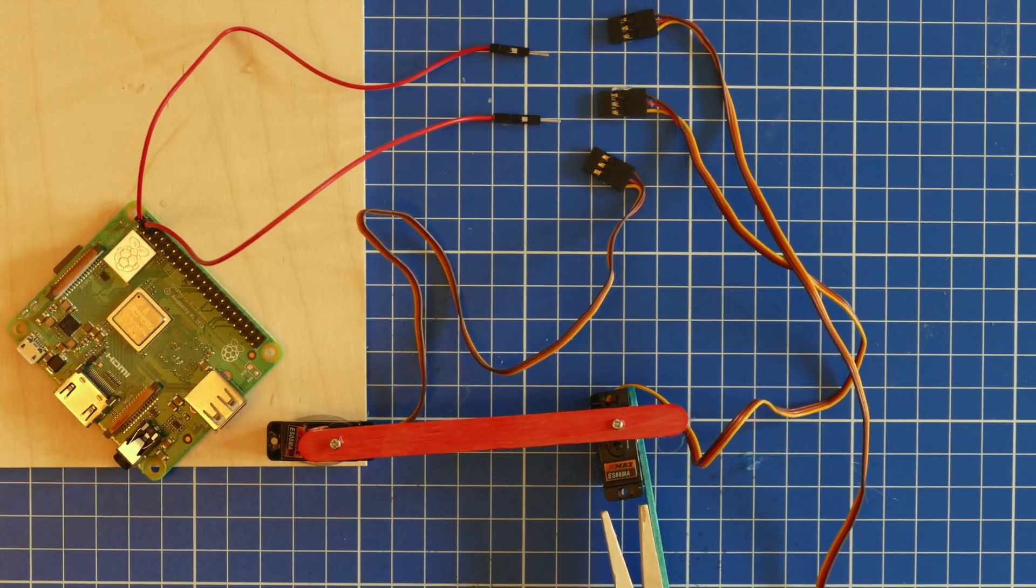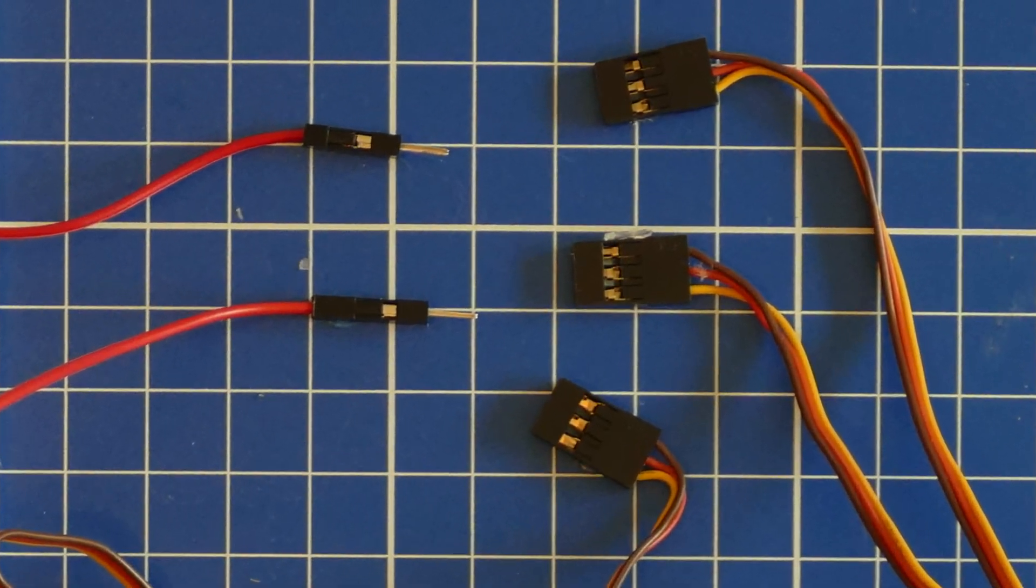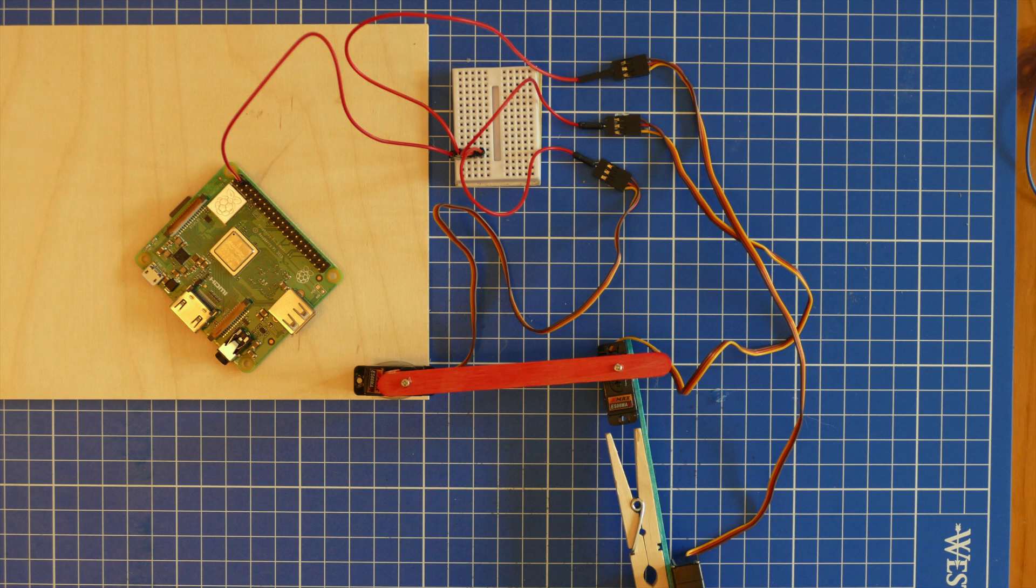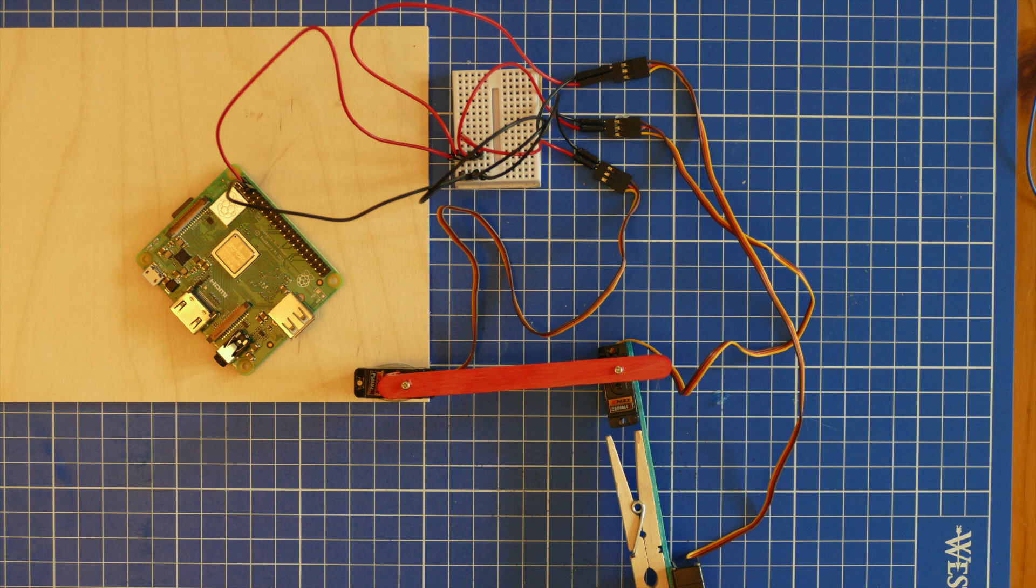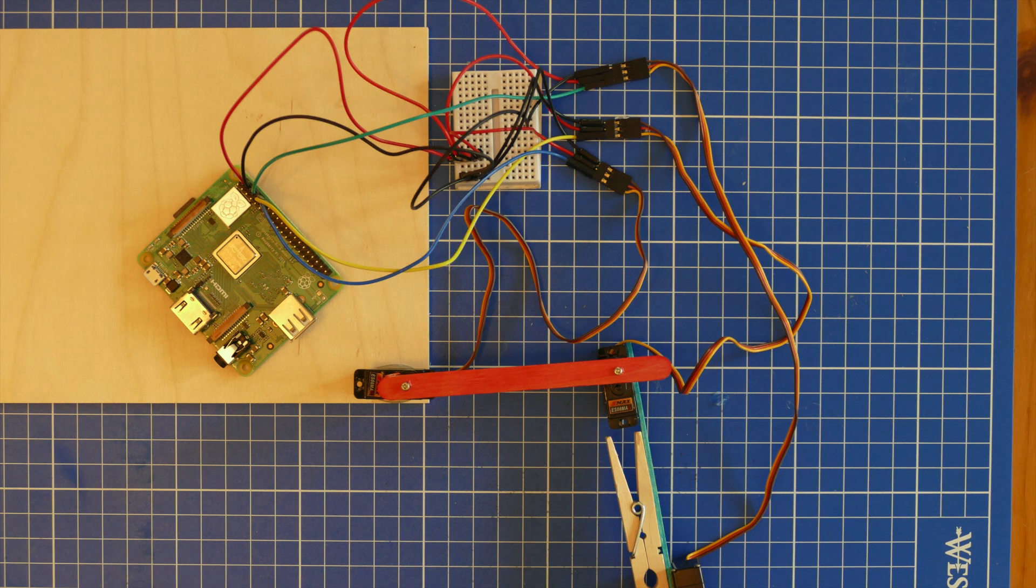Now, there aren't quite enough 5 volt pins on the Pi to drive three servos, so we have to make a little wiring loom to connect everything together. I've used a breadboard and some jumper wires to keep everything simple.